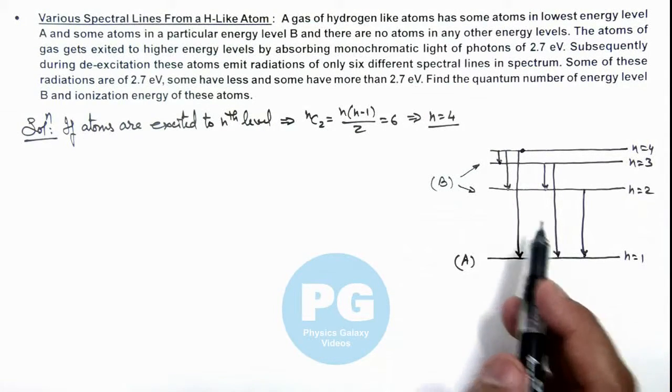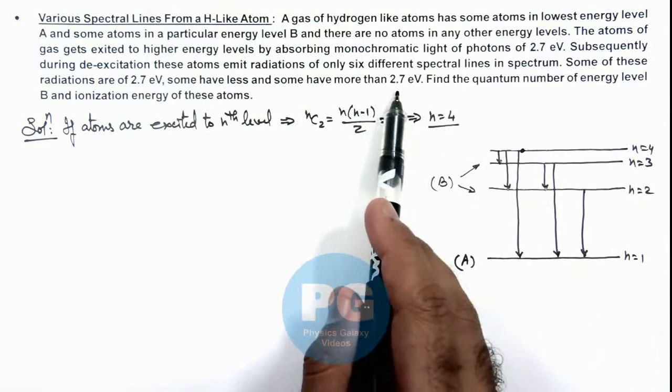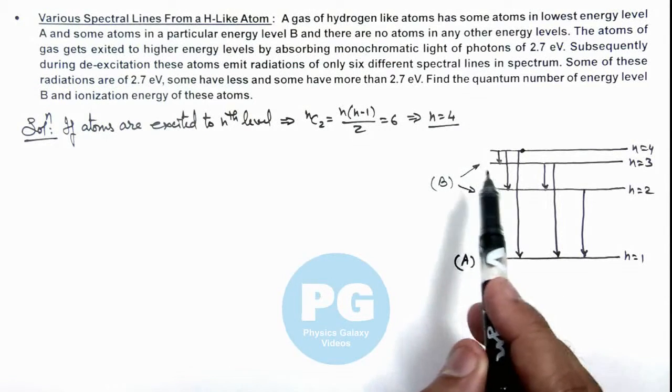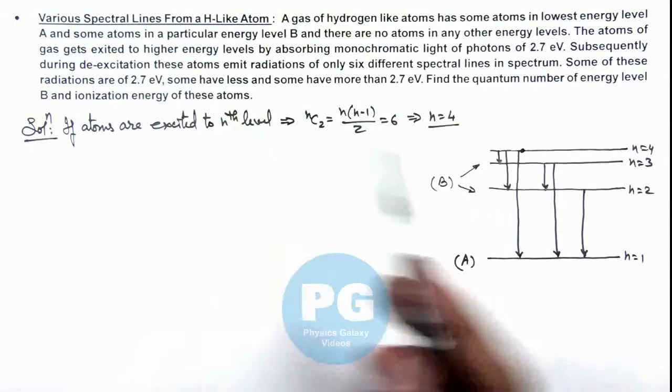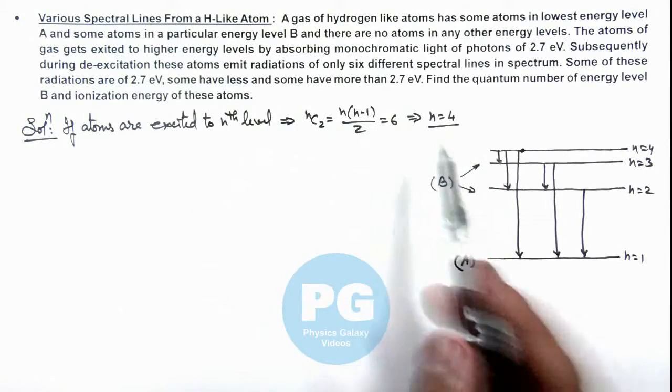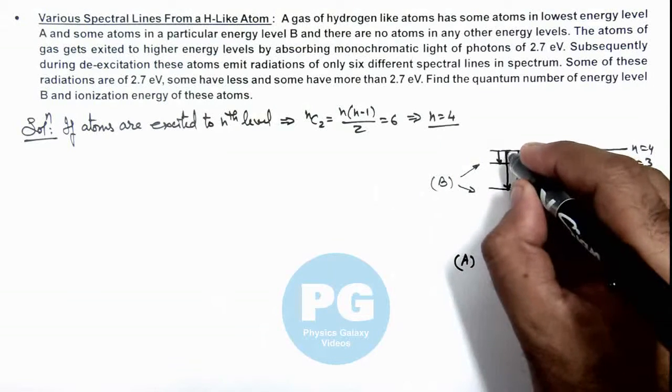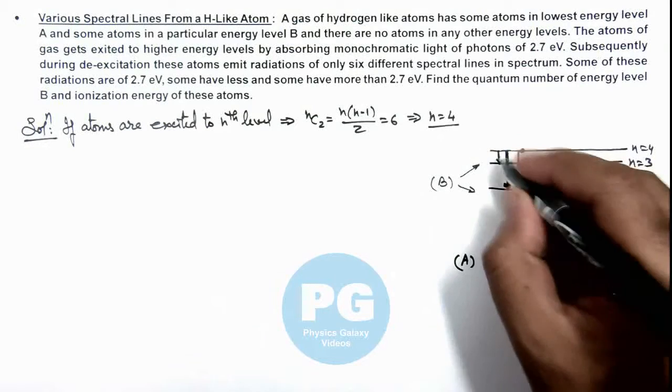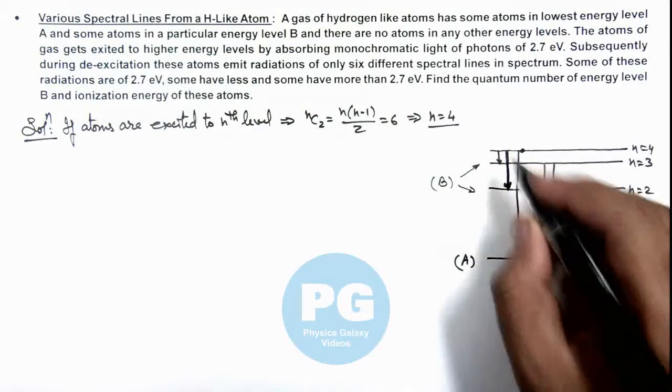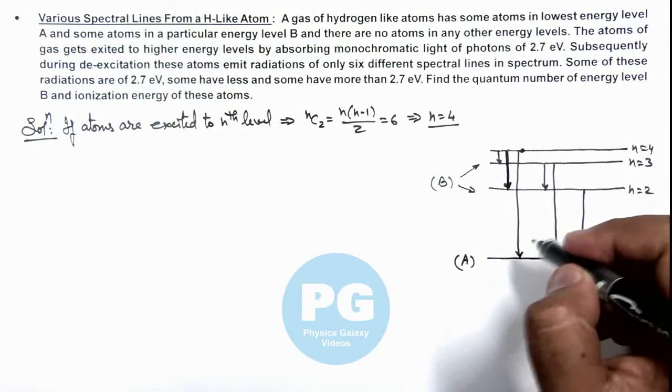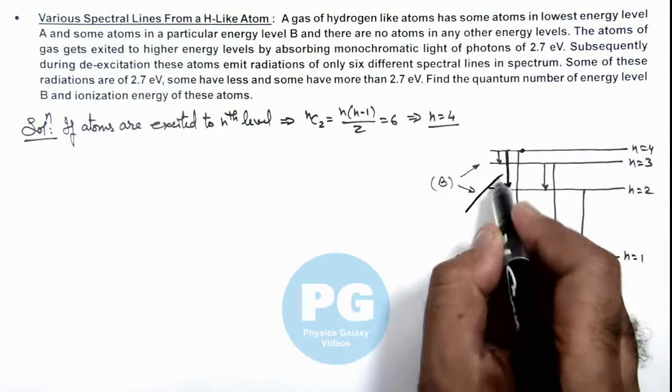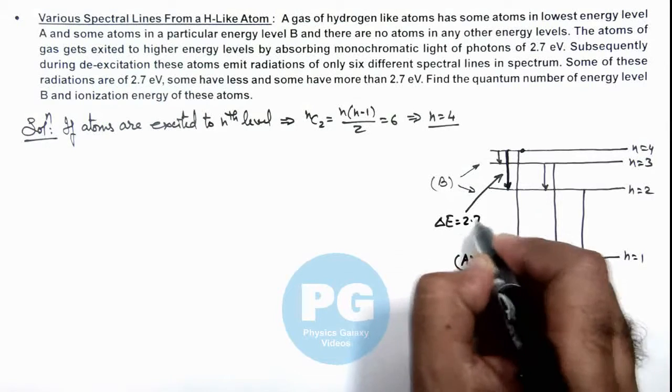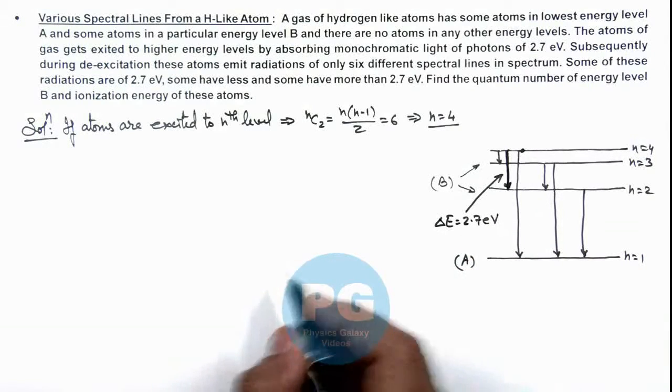We are given that some have energy 2.7, that means one of these would be 2.7, and few would be more than 2.7 and less than 2.7 also. Carefully you can see this is the only possible energy corresponding to which higher and lower both energies are available for n equal to 4 to 2. So this energy would be corresponding to the photon of 2.7 electron volts.